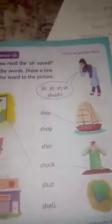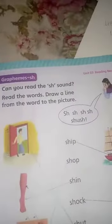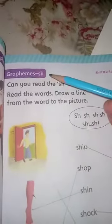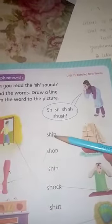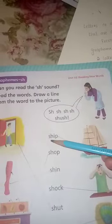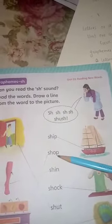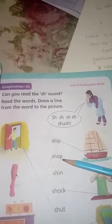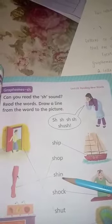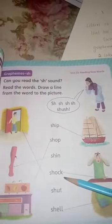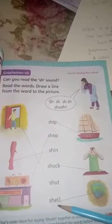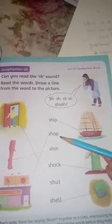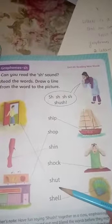Now turn to page number 15. Here we will learn more about the grapheme SH. Can you read these words? SH-IP: ship. SH-OP: shop. SH-IN: shin. SH-OCK: shock. SH-UT: shut. SH-ELL: shell. Ship, shop, shin, shock, shut, shell. Very good!